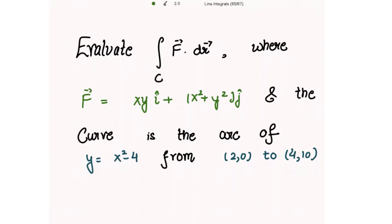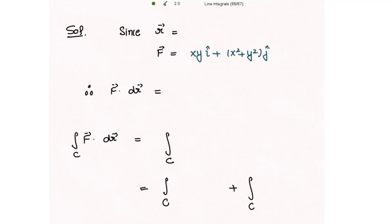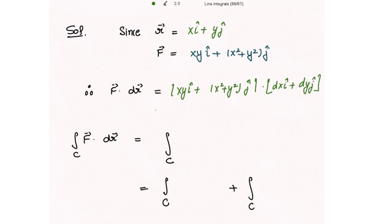Evaluate the line integral of F⃗·dr⃗ where F⃗ is given, and the curve is the arc of y = x² - 4 from (2,0) to (4,10). Taking dr⃗ as dx î + dy ĵ, the dot product of F⃗ = xy î + (x²+y²) ĵ with dr⃗ gives xy dx + (x²+y²) dy, since î·î = 1 and ĵ·ĵ = 1.